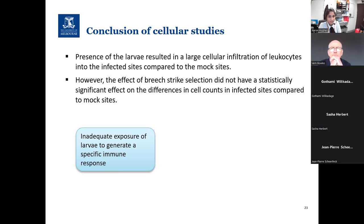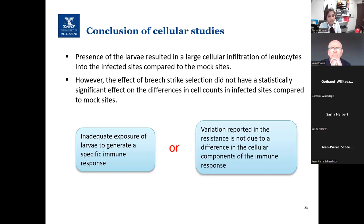In conclusion, the presence of larvae resulted in a large cellular infiltrate of leukocytes at the infected site compared to mock sites. However, fly strike selection status did not have a statistically significant effect on differences observed between infected and mock sites. This means either there was inadequate larval exposure to generate a specific immune response, or variation in resistance is not due to differences in the cellular component of the immune response.